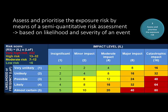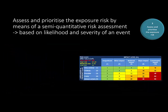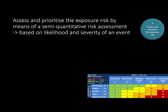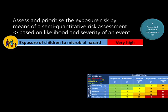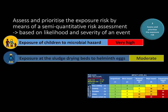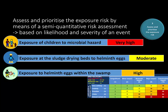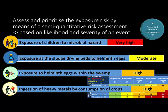To assess and prioritize the exposure risk, researchers conducted a semi-quantitative risk assessment to determine the likelihood, frequency, and impact of encountering one of the hazards along the wastewater chain. Researchers found that children were at very high risk of exposure to microbial hazards. They also found that workers' contact with the sludge drying beds led to a moderate risk of infection with helminth eggs, while farmers working in the Nachavubo swamp were at high risk of exposure to helminth eggs, most likely due to a lack of appropriate protective clothing and equipment.